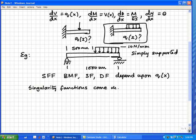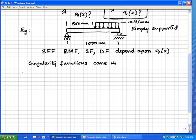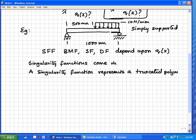The idea is the singularity function represents a truncated polynomial. That is the whole idea. What I mean by truncated polynomial is something like this: you take a typical polynomial and you say, let us say I have a linear function that keeps going like this forever.